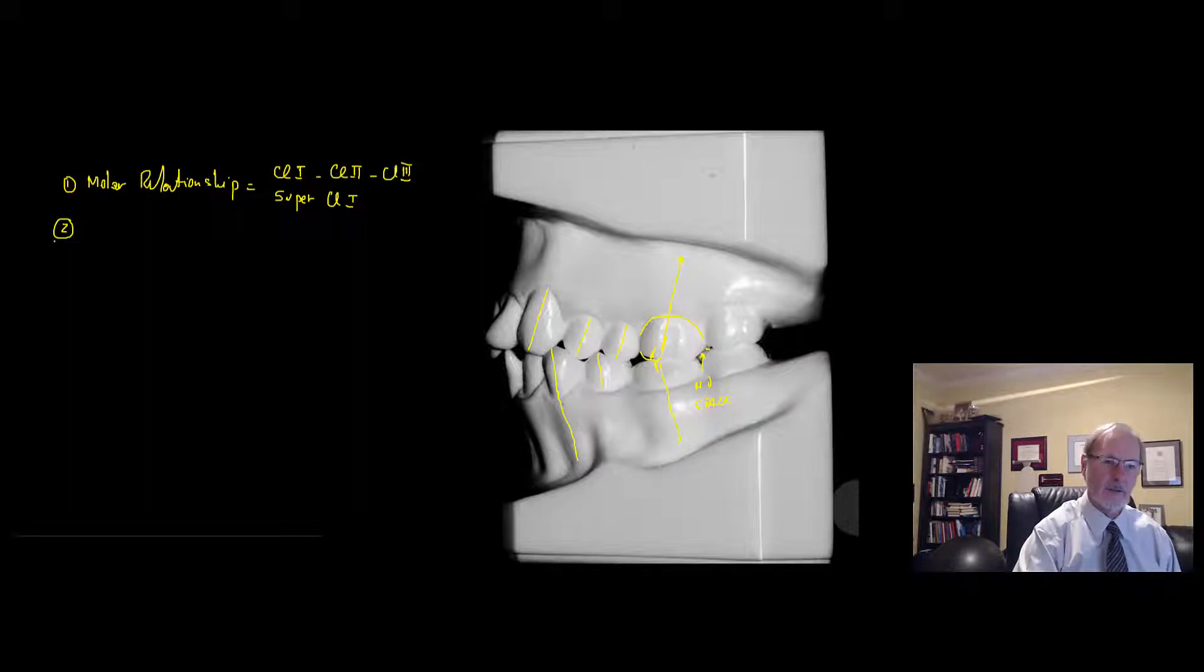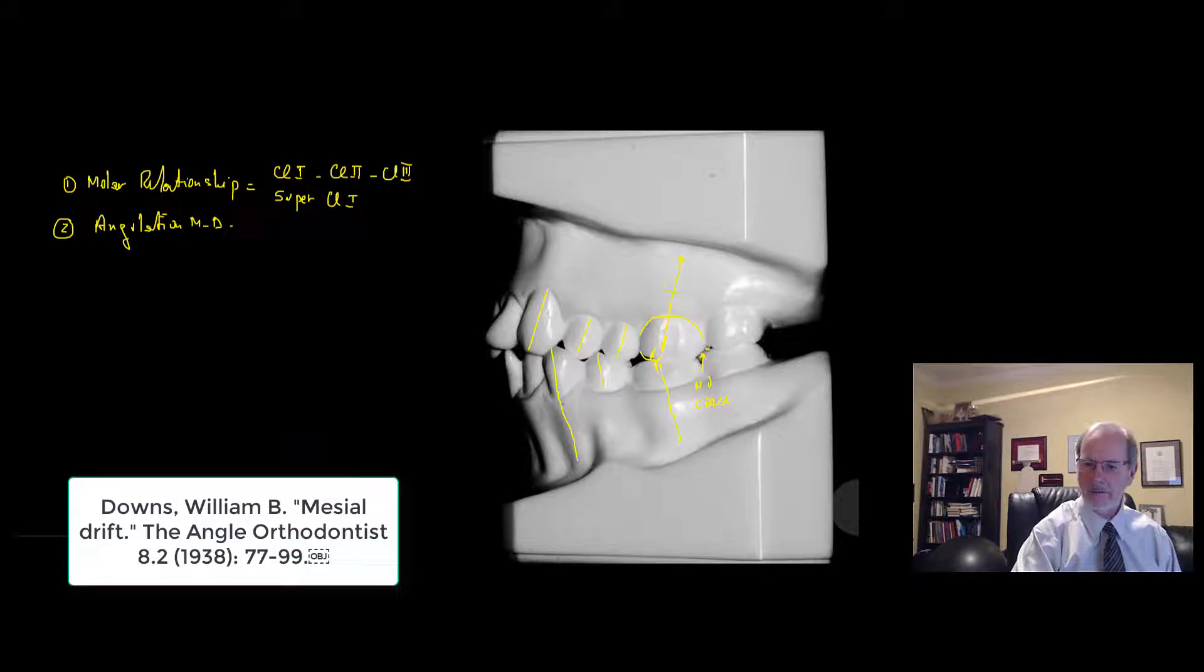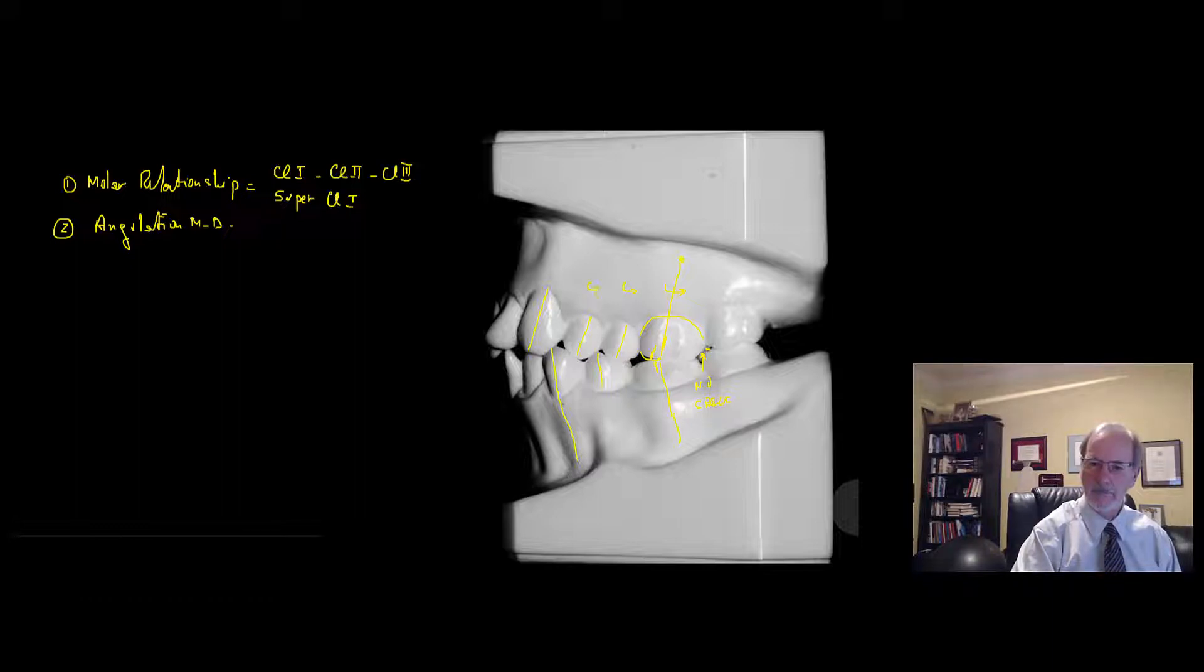Number two is you look at the angulation of the teeth, which is in a mesial distal aspect. It will get you a good idea of what could be done fairly easily with some tipping or torquing and how to create space. Obviously, molar distalization is much easier because you can just tip the teeth around the center of rotation and you'll get a lot of space.